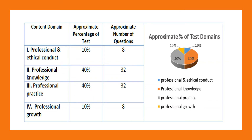The test is divided into four standards, also called content domains. The first standard is professional and ethical conduct, which carries only 10% of the entire weightage — you barely get eight questions on this. Standard two and standard three carry the heaviest weightage, 40% each, with 32 questions from each, so I advise you start your preparation from standards two and three.